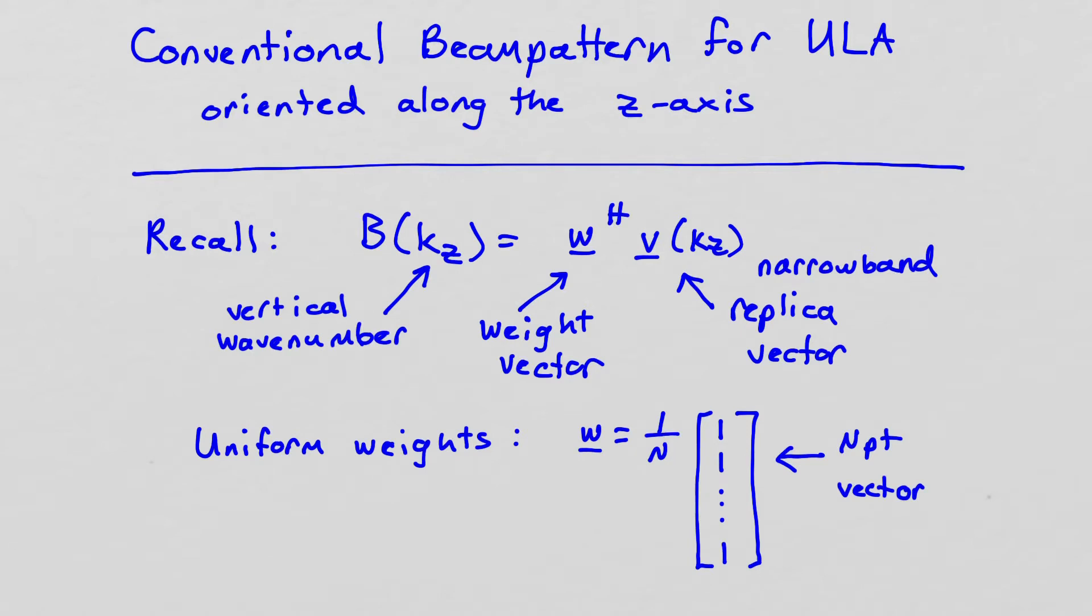So we're going to look at the beam pattern for a uniform line array oriented along the z-axis. You recall that the beam pattern is defined as a function of the wave number, in this case the vertical wave number kz. So we have b of kz, and it's equal to the weight vector hermitian times a narrowband replica vector. The narrowband replica vector characterizes a pure plane wave signal with wave number kz arriving along the array.